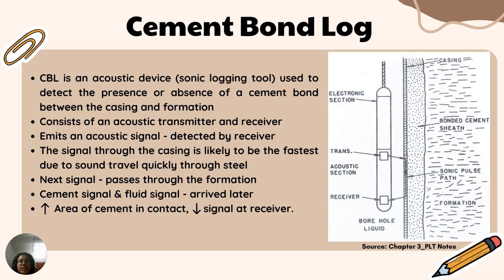The cement bond log is an acoustic device that uses the sonic logging tool to detect the presence or absence of a cement bond between the casing and formation. It consists of a transmitter and receiver. The tool is lowered into the well on a wireline and emits sound waves that travel through the casing and cement to the formation.